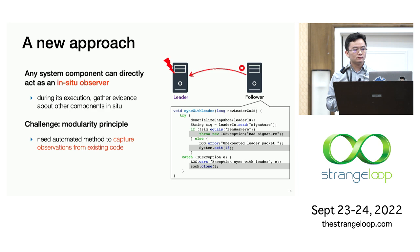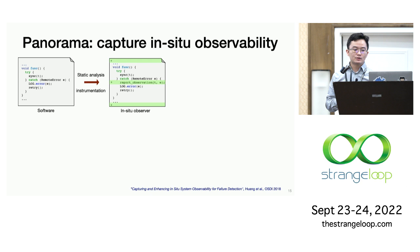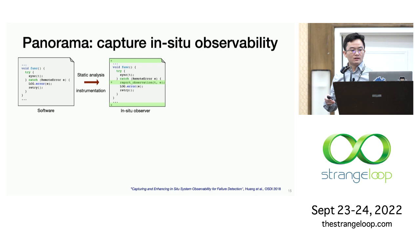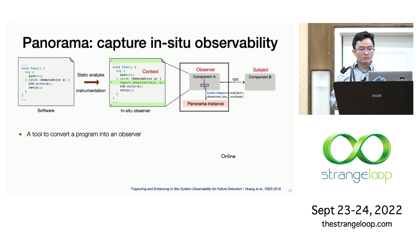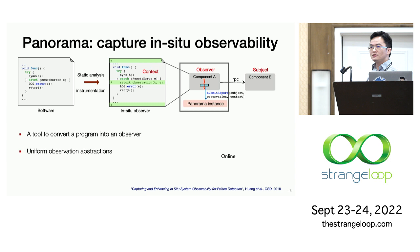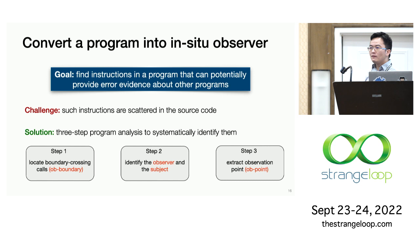We designed a framework called Panorama to realize this approach. At a high level, Panorama works in two stages. In the offline stage, it analyzes and instruments a program to convert it into an observer. At the runtime stage, when the instrumented component interacts with other components in the system, it may trigger those instrumented hooks and report those observations. The framework has a centralized service that gathers these observations and propagates and exchanges them with other sources.